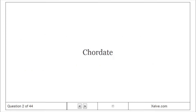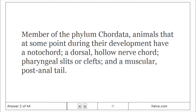Chordate: Member of the phylum Chordata. Animals that at some point during their development have a notochord, a dorsal hollow nerve cord, pharyngeal slits or clefts, and a muscular post-anal tail.